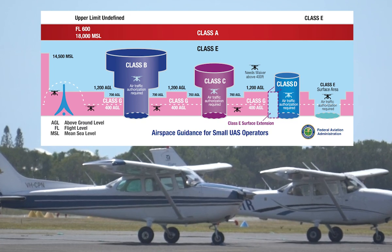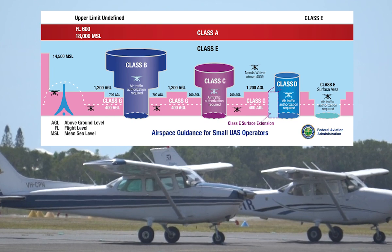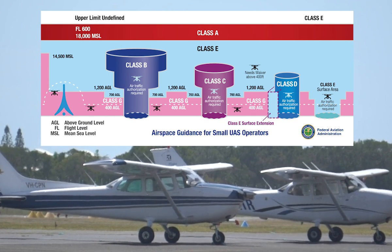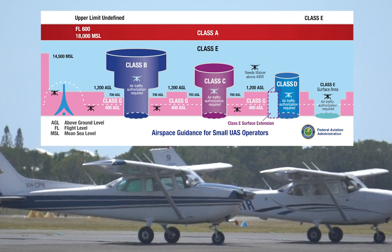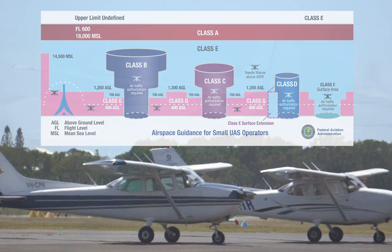Some small airports are located in Class E controlled airspace, but do not require prior authorization in order to operate near them since the controlled airspace starts at 700 feet AGL. There are multiple types of Class E airspace, only one of which — Class E2 — requires authorization in order to operate from the surface to 400 feet AGL.